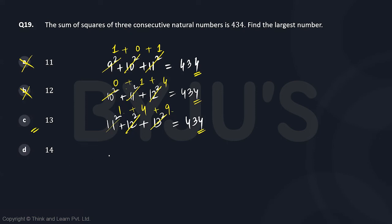Let's check the next option. 14 is the largest one, so 14 squared plus 13 squared plus 12 squared. Now 12 squared will end in 4, 13 squared will end in 9, 14 squared will end in 6.